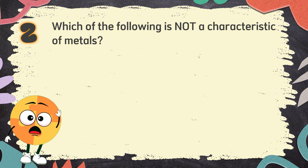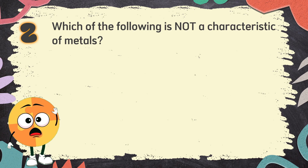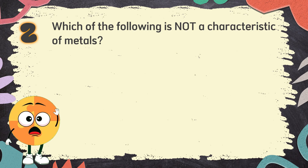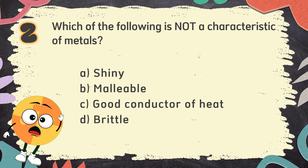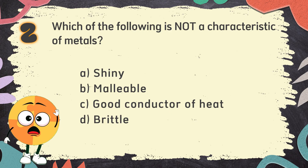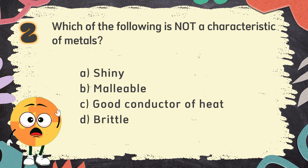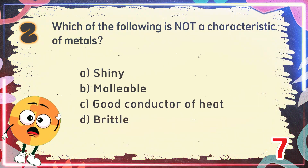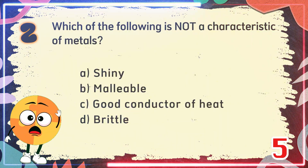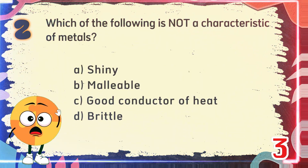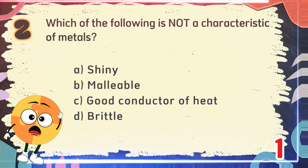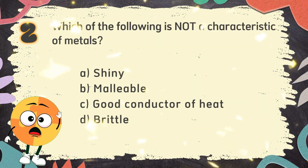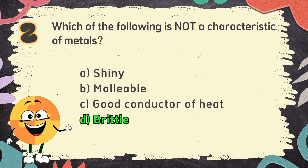Number 2. Which of the following is not a characteristic of metals? The choices are A. Shiny, B. Malleable, C. Good conductor of heat, D. Brittle. The correct answer is D. Brittle.